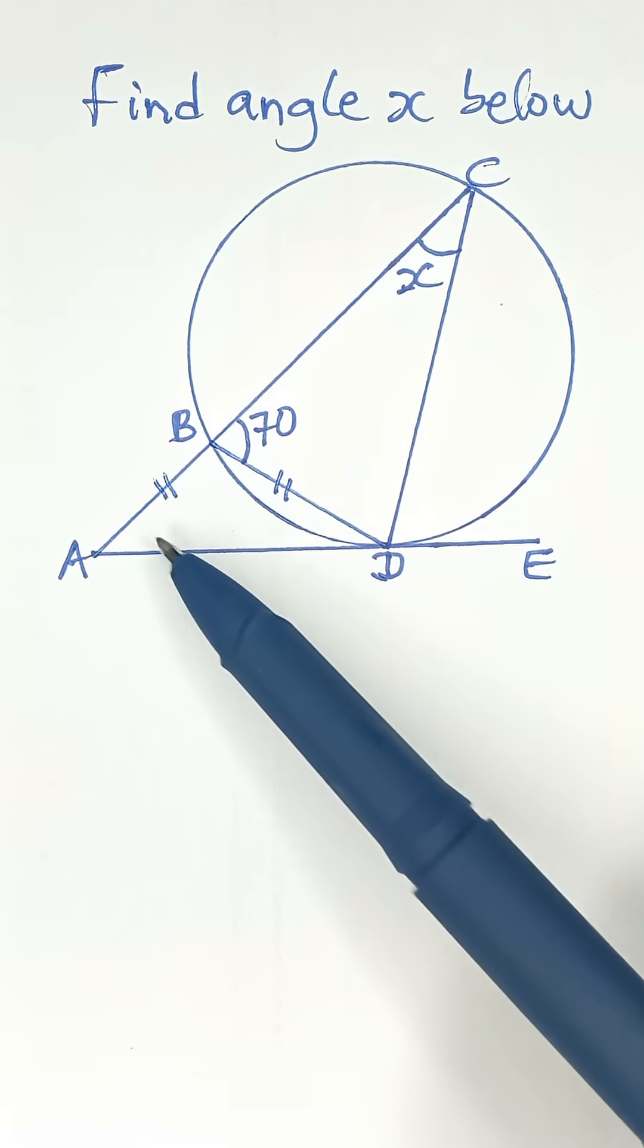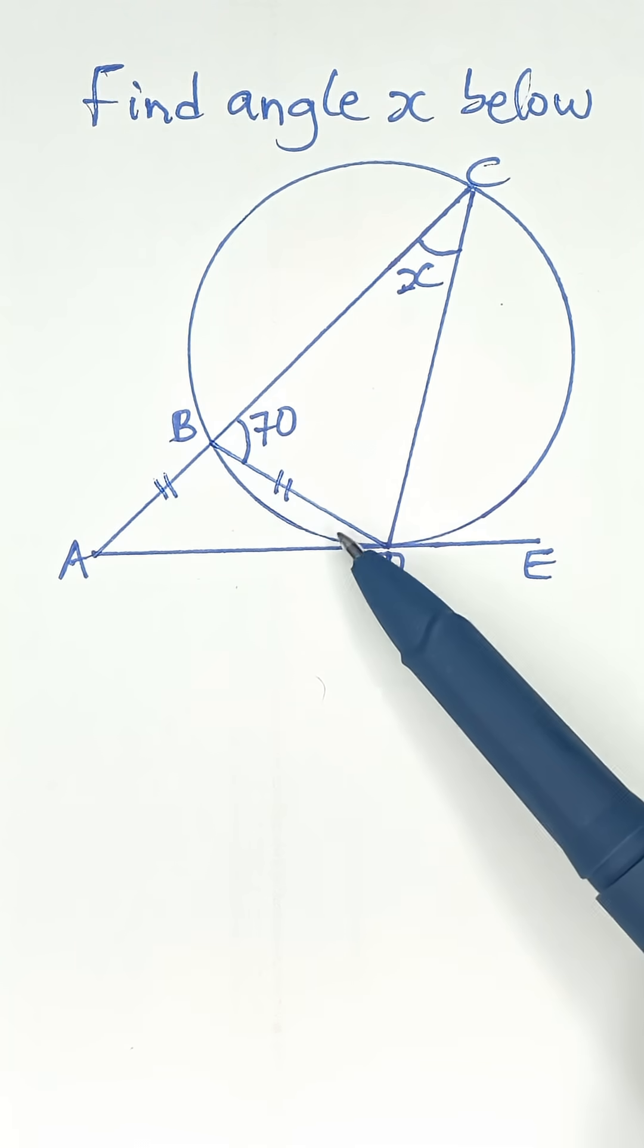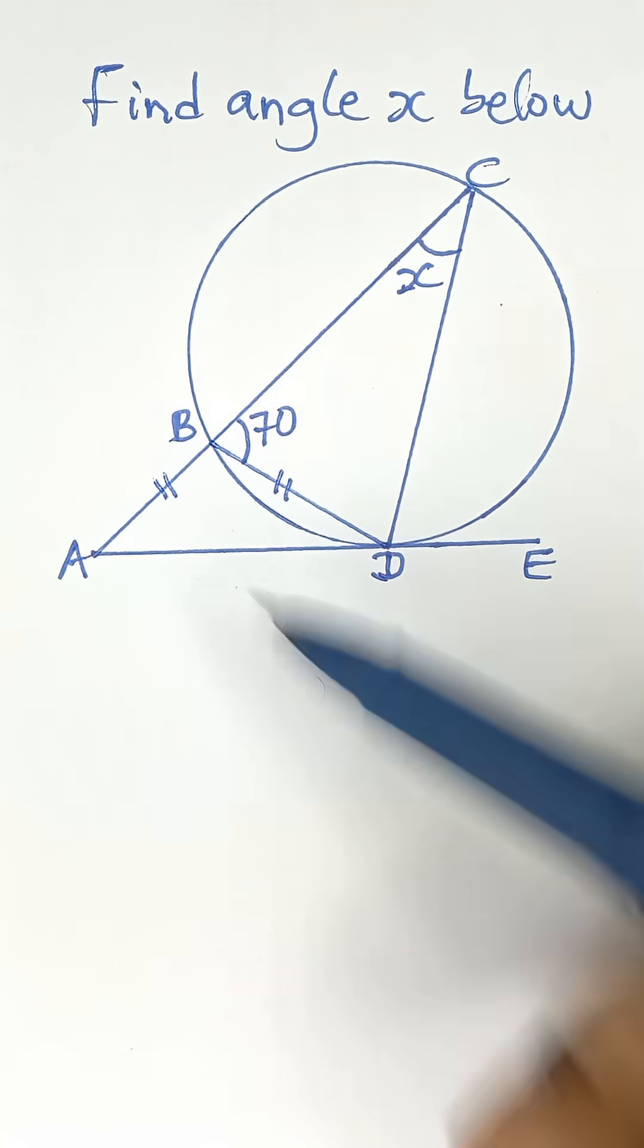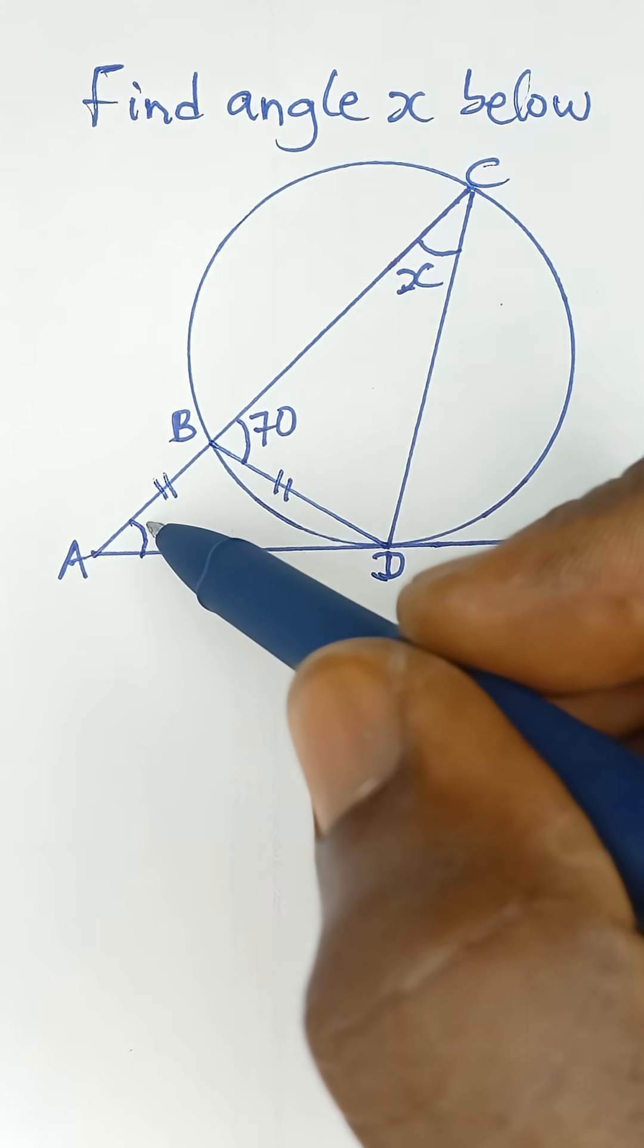Each one will be 35 since 70 divided by 2 is 35. So this angle is 35 and this angle is 35 as well, and they both add up to 70.